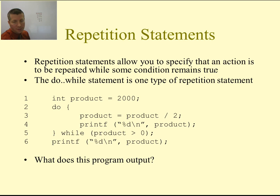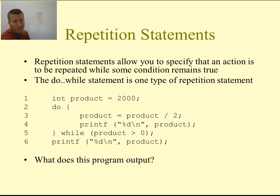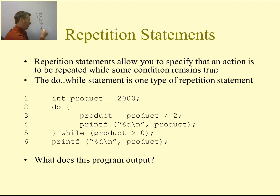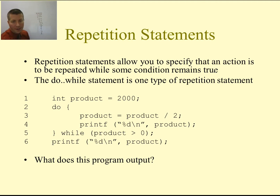67 is still greater than 0, so we divide 67 by 2, giving us 33.5. We drop the decimal and print 33. 33 is greater than 0, divide by 2 gives 16.5, so we print 16. 16 is still greater than 0, divided by 2 we get 8. 8 is greater than 0, divided by 2 gives 4, which is printed. 4 is greater than 0, divided by 2 gives 2, which gets printed. 2 is greater than 0, we divide 2 by 2, we get 1, and we print that out.